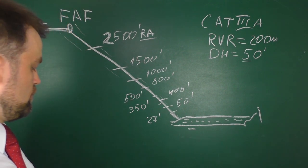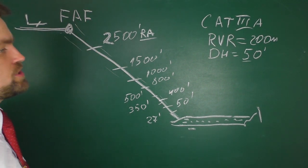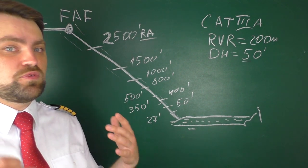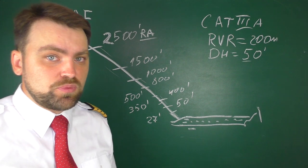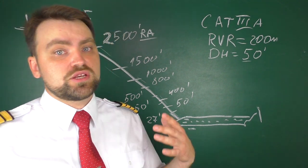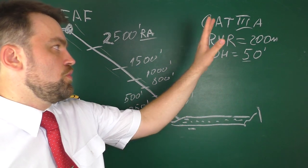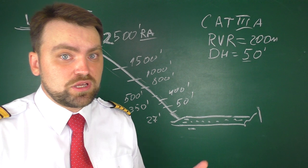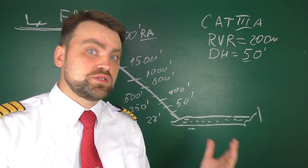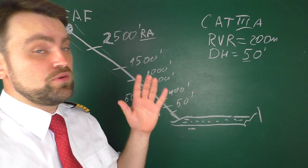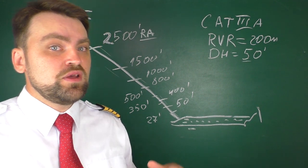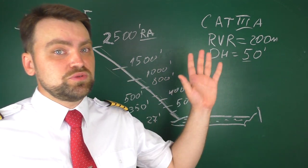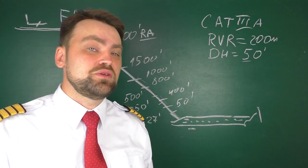Before entering the final approach fix, you've already decelerated and configured the airplane. You need to check the low visibility approach reminder, which tells you what's required to perform the automatic approach in low visibility conditions. Check the weather, check NOTAMs, and check crew capability — because you may not be certified. For example, when you first get your Boeing 737 rating, you have a Category 1 limitation, and you need additional training to be certified for Category 2 and 3 approaches.